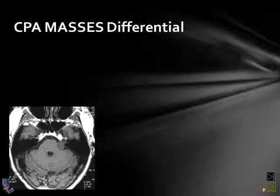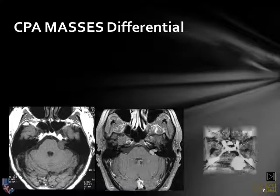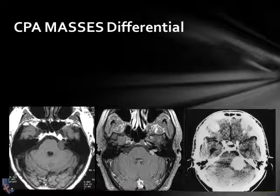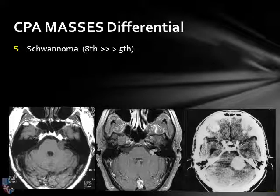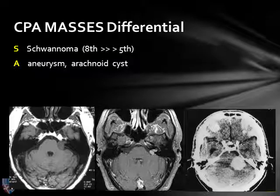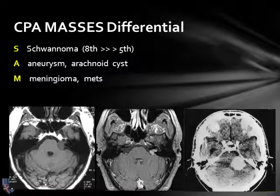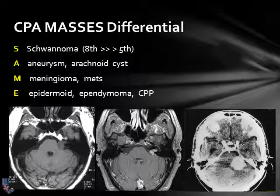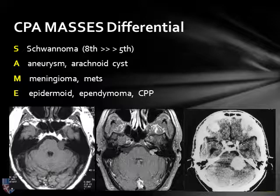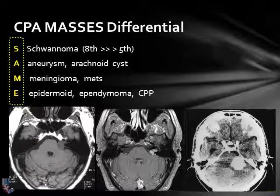For the differential diagnosis of extra-axial lesions in the cerebellopontine angle cistern, we have the possibility of a lesion involving the internal auditory canal, most likely a schwannoma, although schwannomas of the fifth or trigeminal nerve are also possible. We have vessels in the subarachnoid space, so aneurysm is possible, as well as an arachnoid cyst. We could have a meningioma, metastatic disease, or an epidermoid inclusion cyst. This is why we always give the same differential diagnosis whenever there is a cerebellopontine angle mass.